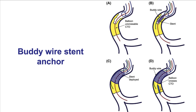A variation of the anchoring technique is the so-called body wire stent anchor. In a case with a proximal lesion and a distal lesion, a stent is deployed over the first wire, jailing the second wire against the vessel wall, which provides extra guide support for delivering additional equipment distally in the vessel.